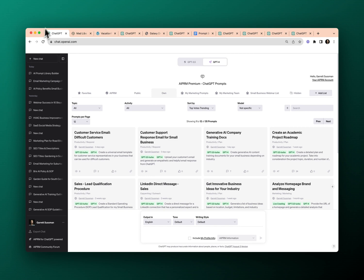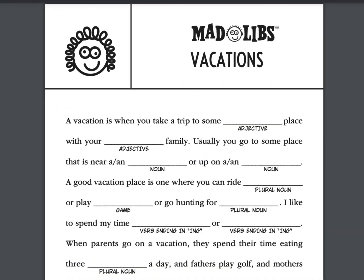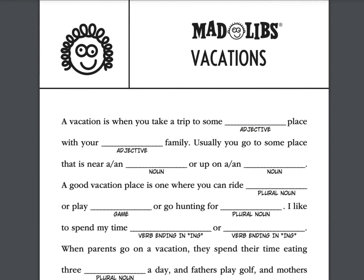Think back to Mad Libs. If you're not familiar with Mad Libs, basically the idea was a little fun story, but throughout the story, instead of a noun or an adjective, you'd have a placeholder. You wouldn't know what the story was about, and you'd have fun putting in whatever you thought was a funny pronoun and then reading back the story. Variables in prompts are the same thing.